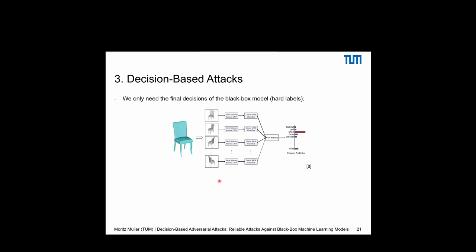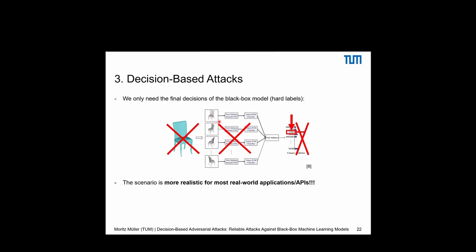Looking at the full deep learning pipeline — input image, CNN or other classifier, confidence scores, final hard label — in the decision-based attack setting we really only need this hard label. We need no information about the training data, the model itself, or any confidence scores. This makes this threat model realistic and important for real-world applications: we can now attack self-driving cars, facial recognition systems, and even home assistants like Alexa or Google.